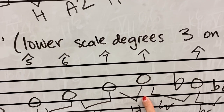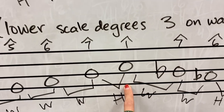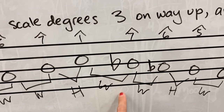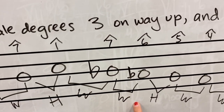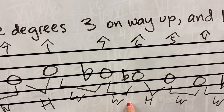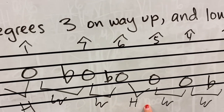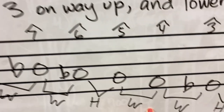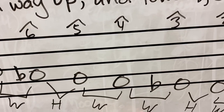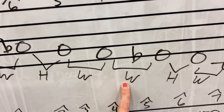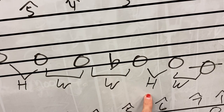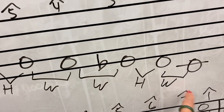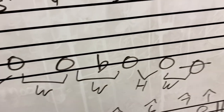Descending in the scale: C to B-flat is a whole step, B-flat to A-flat is a whole step, A-flat to G is a half step, G to F is a whole step, F to E-flat is a whole step, E-flat to D is a half step, and D to C is a whole step.